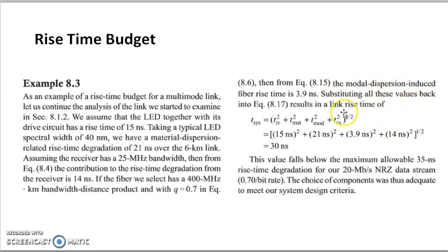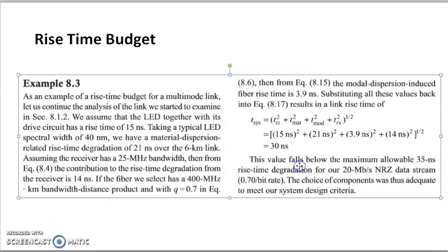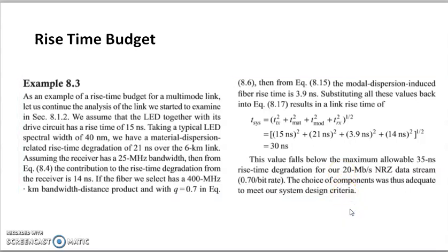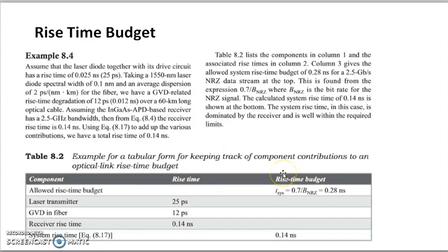From the equation, the modal dispersion-induced fiber rise time is 3.9 nanoseconds. Substituting all these values — transmitter rise time, material dispersion, modal dispersion, and receiver rise time — we get the total system rise time of 30 nanoseconds. This value falls below the maximum allowable 35 nanosecond rise time degradation for a 20 megabits per second NRZ data stream, calculated as 0.70 divided by the bit rate.